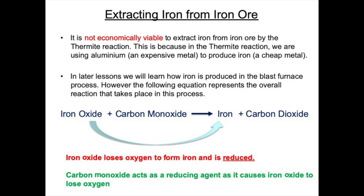Although the thermite reaction does extract iron from iron ore by removing oxygen from iron oxide, it is not used commercially on a large scale to produce iron. This is because it would not be economically viable — you're using an expensive metal, aluminium, to extract a relatively cheap metal, iron. The reason aluminium is more expensive than iron is because it's a more reactive metal, and the more reactive a metal is, the harder it is to extract from its ore.